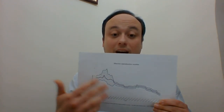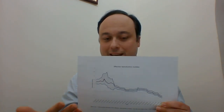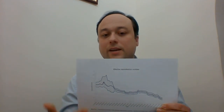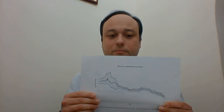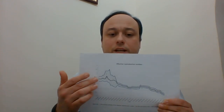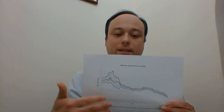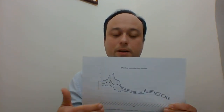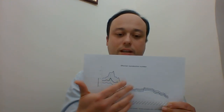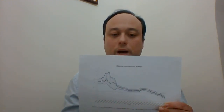Obviously, here we started with a high reproduction ratio because at that time we didn't have any particular restrictive measures. Then, after having some restrictive measures, the reproduction ratio started to decrease to the point where we had 1.5, and now we have a reproduction ratio which is less than 1. But does this mean that if the reproduction ratio is less than 1, we don't have any more issues in relation to this pandemic?